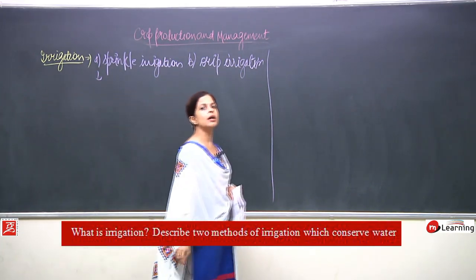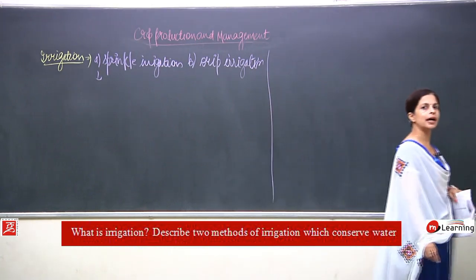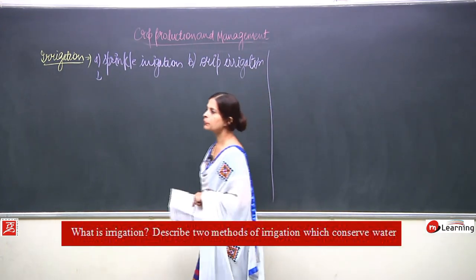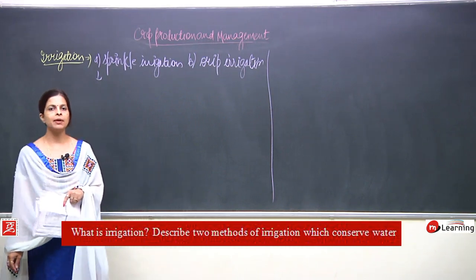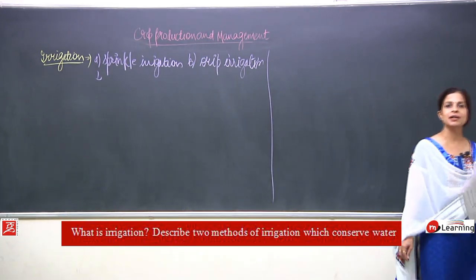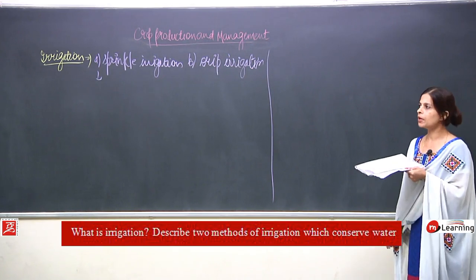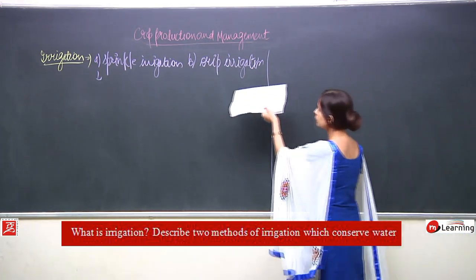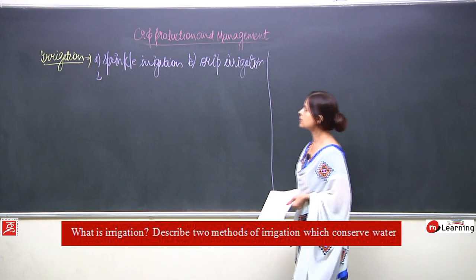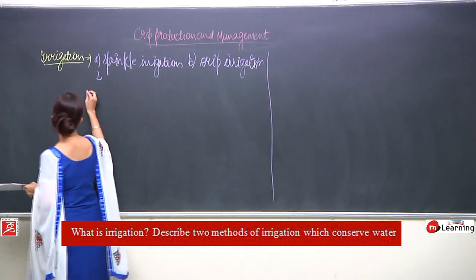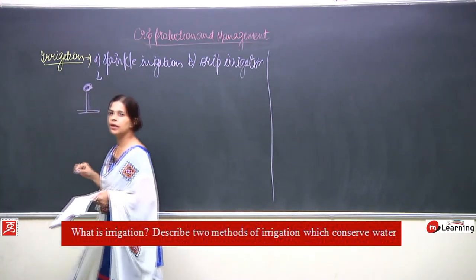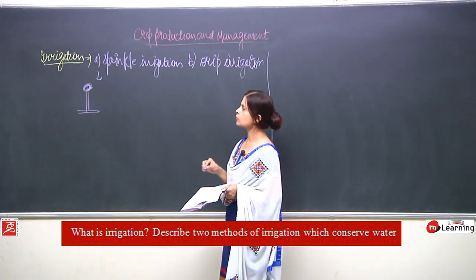Sprinkler irrigation: a perpendicular pipe has a nozzle attached which rotates in a particular direction, stops for some time, then rotates again. Water comes out in the form of raindrops — like rainfall — which is why it is called sprinkler irrigation.